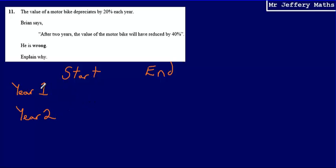At the start of year one, we're not told how much the motorbike costs, but what we can say is that at the start of year one, let's just call it X, because we don't know how much the motorbike is costing.